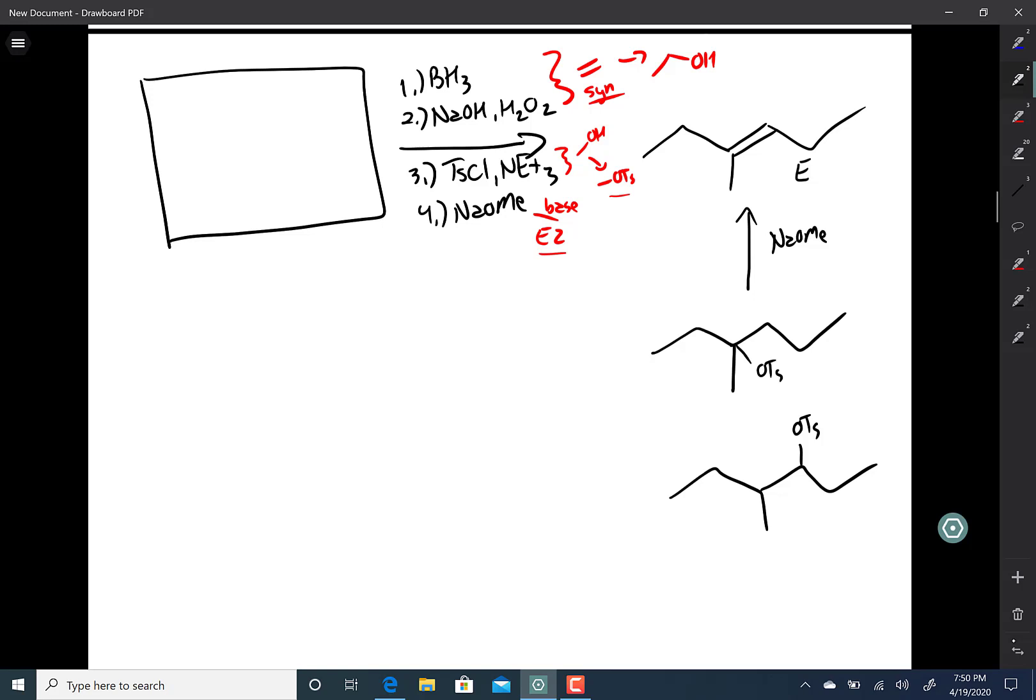And when your alpha carbon and beta carbon are both chiral centers, then you'll get just one diastereomer. Here, the alpha carbon and beta carbon aren't both chiral centers, and so this would give you both diastereomers. Therefore, this one is out.